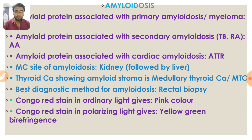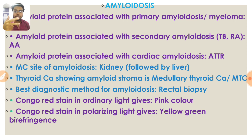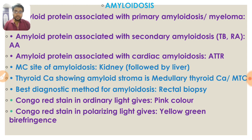Now a very important topic — amyloidosis. Every year they ask things from amyloidosis. The amyloid protein associated with primary amyloidosis is AL, with secondary amyloidosis is AA, and with cardiac amyloidosis is ATTR. The most common site of amyloidosis is the kidney followed by the liver, although it differs in different conditions. Medullary carcinoma of the thyroid is associated with amyloid stroma.